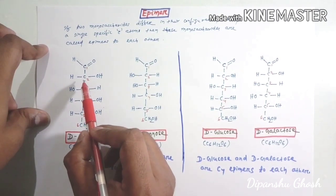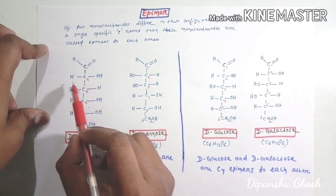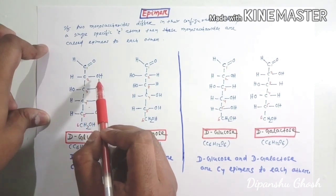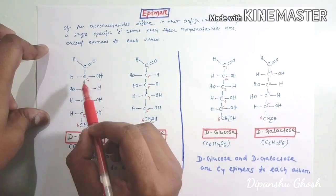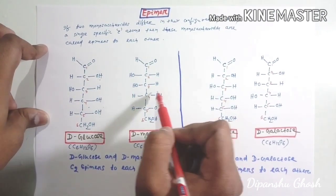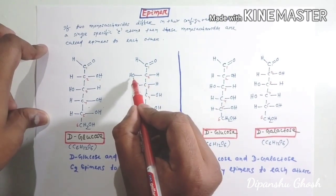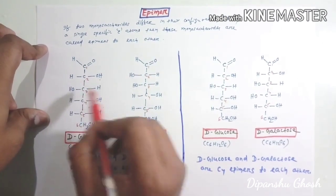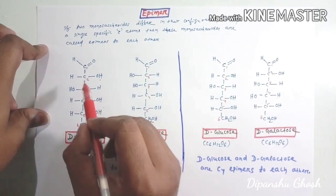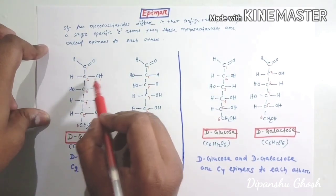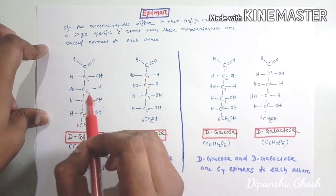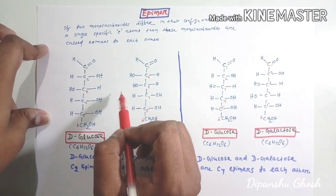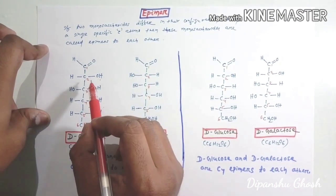In case of D-glucose, at carbon number 2, the hydrogen atom is attached to the left side while the hydroxyl group is attached to the right side. But in case of D-mannose, the second carbon has the hydroxyl group attached towards the left side and the hydrogen atom attached to the right side. So these two molecules, D-glucose and D-mannose, differ only at the arrangement of functional groups around C2.